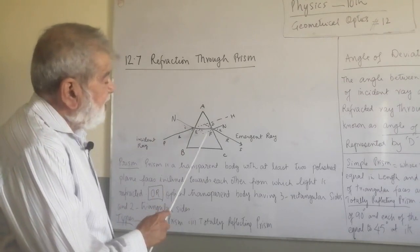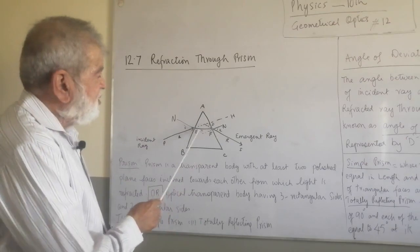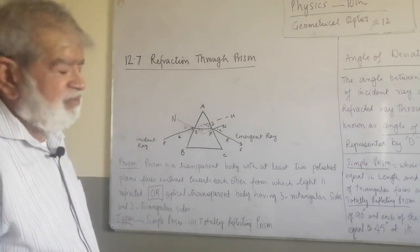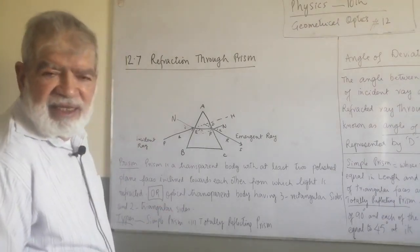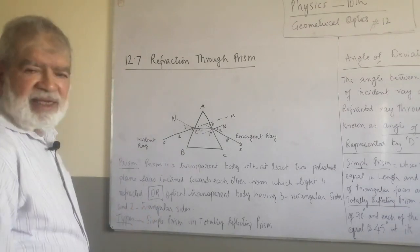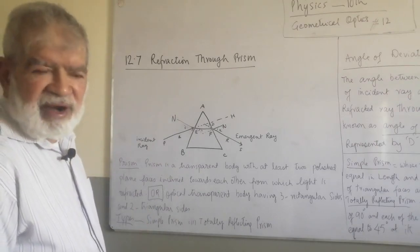And it goes out from the side AC. At this point of incidence, N is normal. Angle E is the angle of emergence. Please understand this. Angle E is the angle of emergence. Angle I is the angle of incidence. Angle R is the angle of refraction.